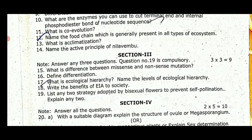Section 3 — answer the three-mark questions. Question 19 is compulsory. Topics: what is the difference between missense and nonsense mutation; define differentiation; what is ecological hierarchy; name the levels of ecological hierarchy; write the benefits of EIA to society; list out any two strategies adopted by bisexual flowers to prevent self-pollination and explain any two.